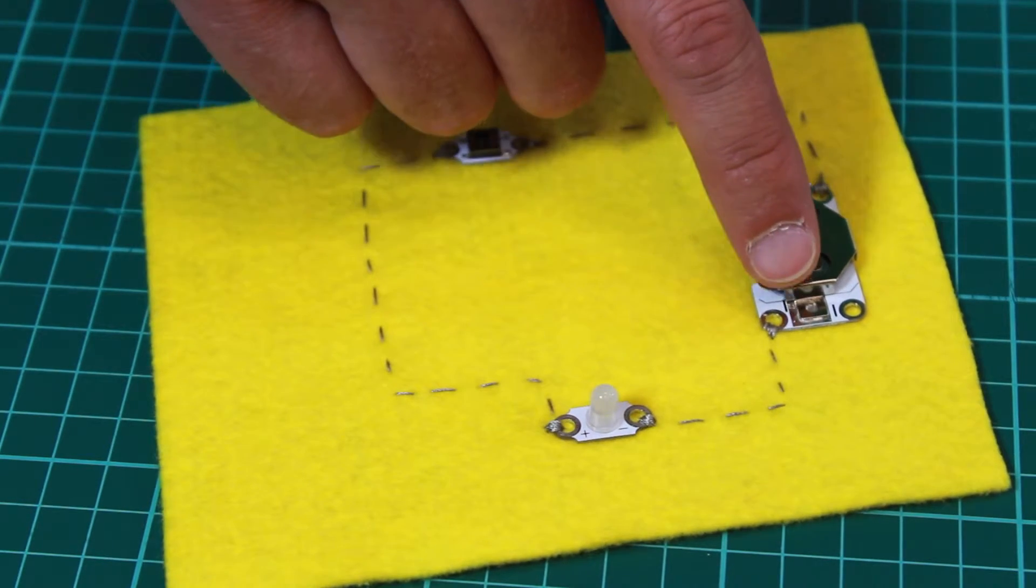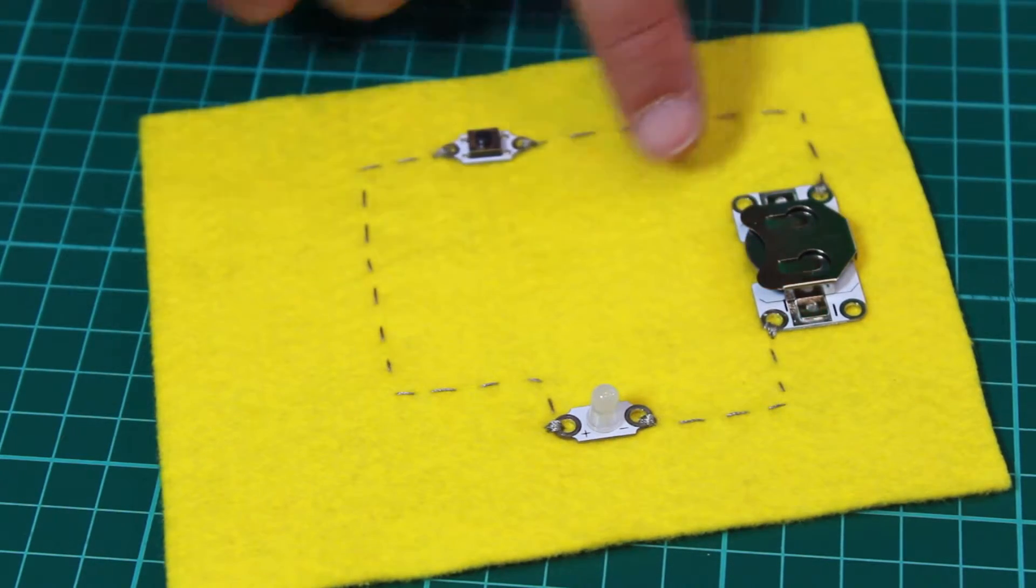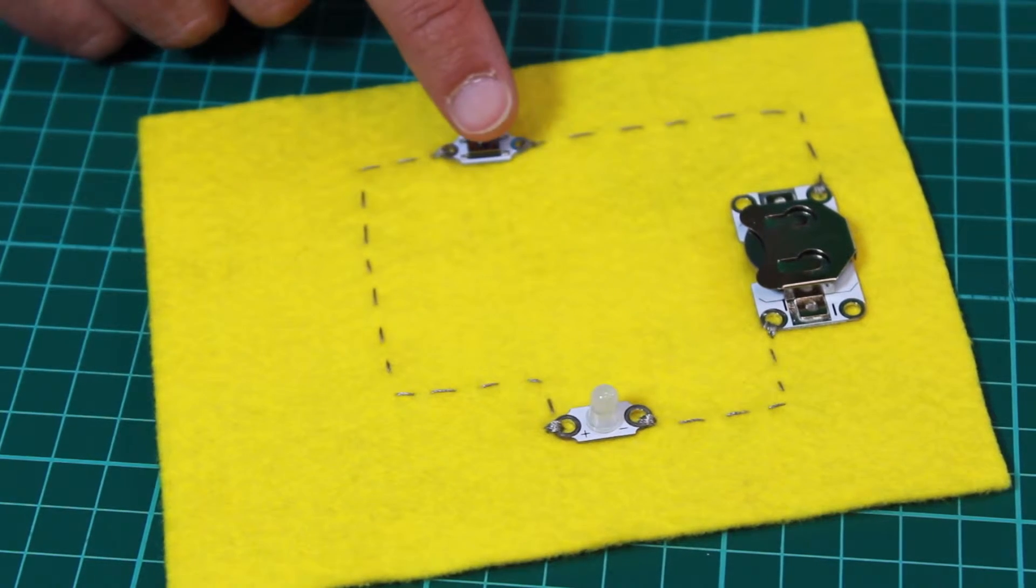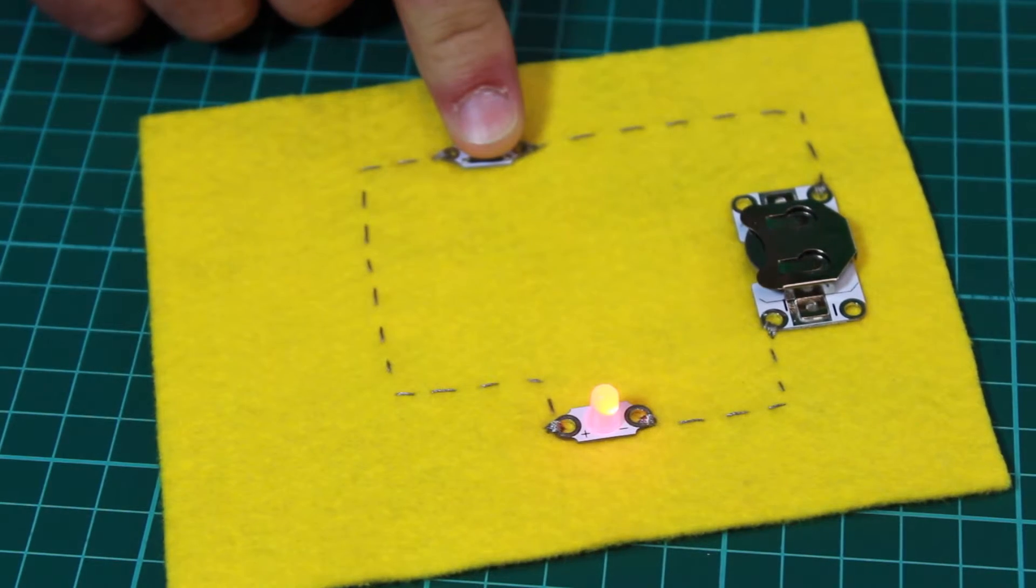which we connect to the negative connection on the battery holder here, and the positive connection connects to the positive connection on the battery holder via this momentary switch. Now, if we press the switch, we can see the LED comes on, and it will start to change colour.